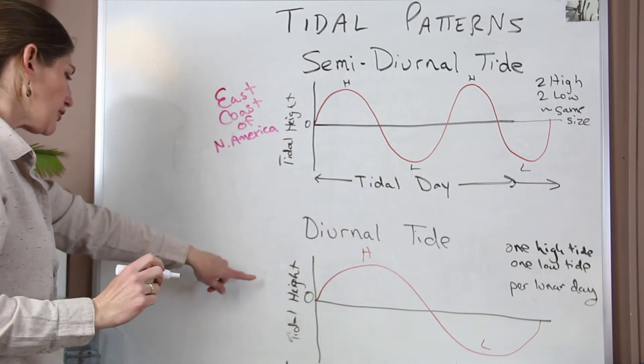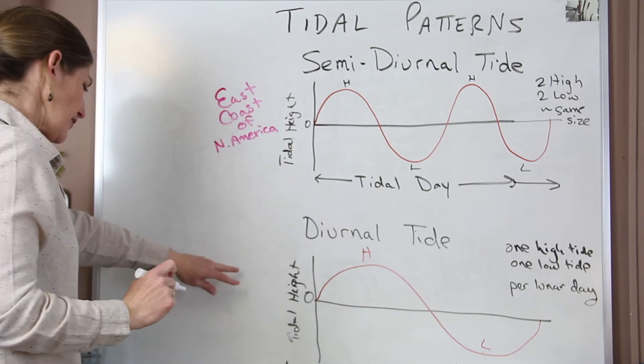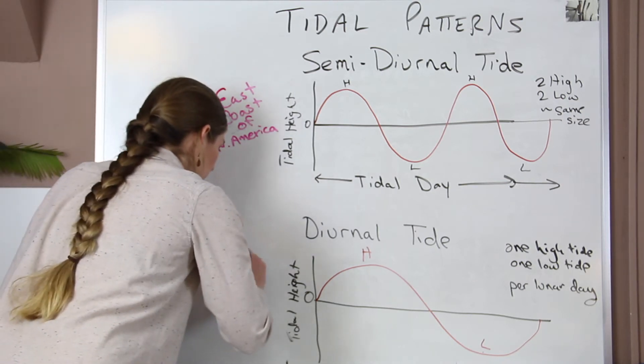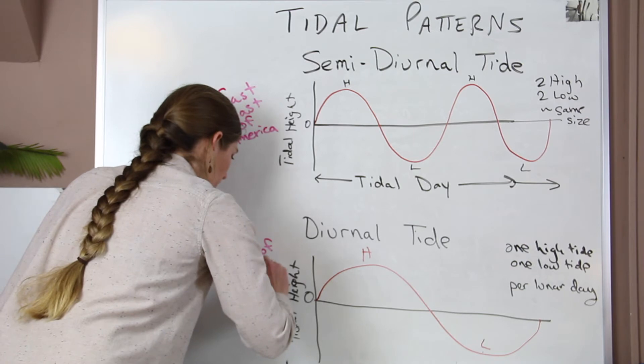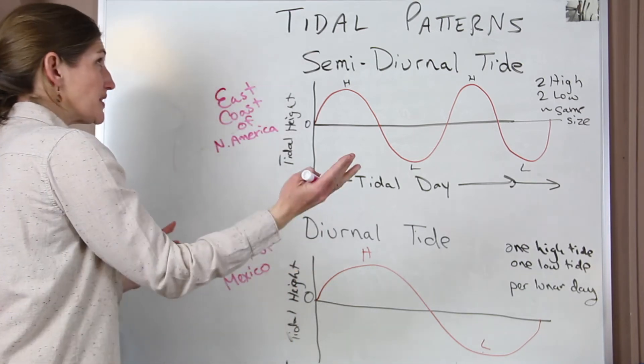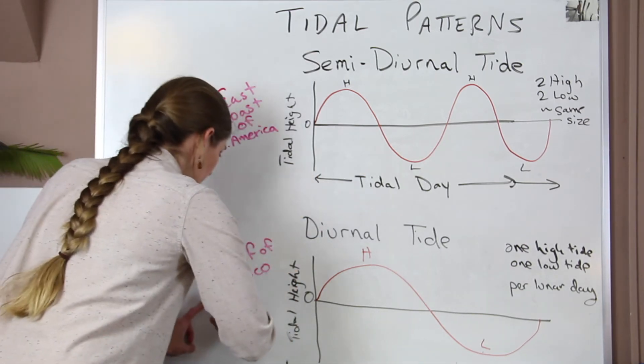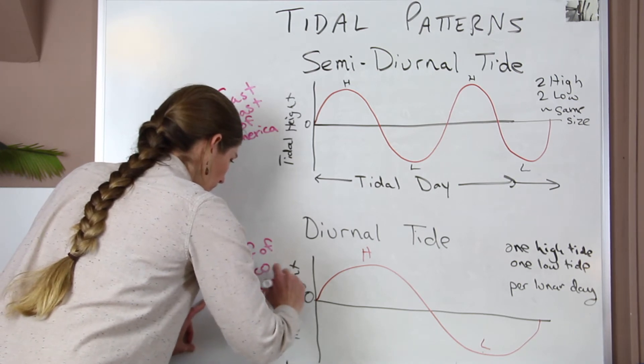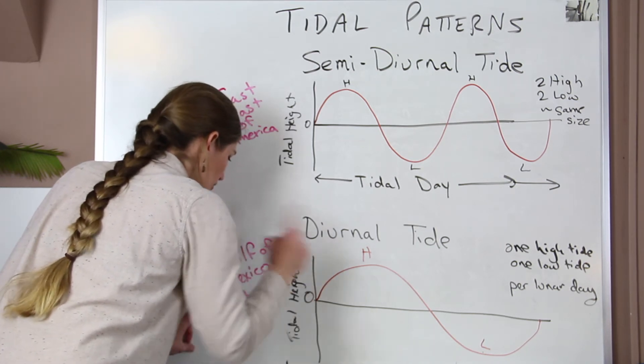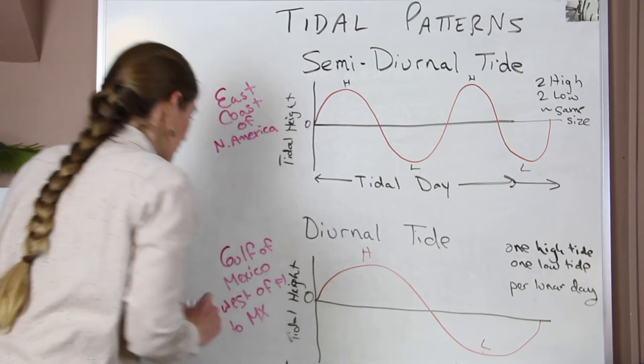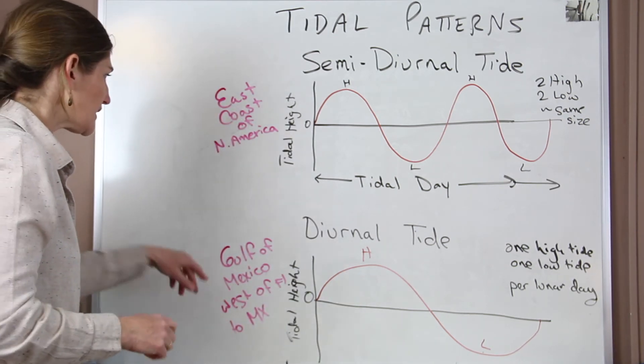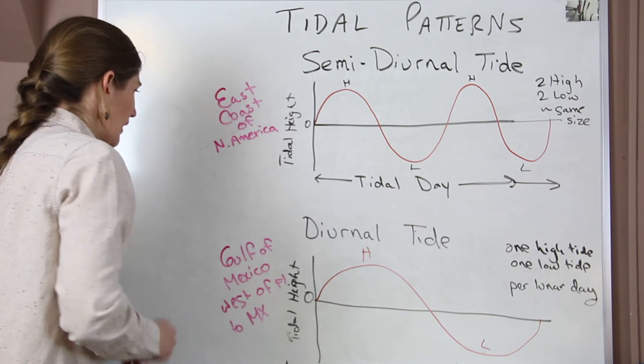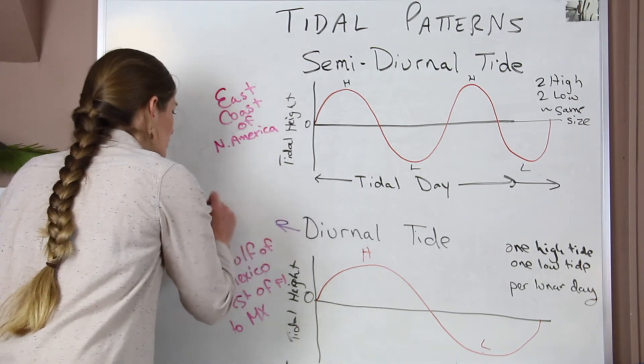Okay, we see our diurnal tides, they're very common in the Gulf of Mexico, and that's going to be west of Florida all the way through Texas. The reason we see this diurnal tide here, they're very common in closed basins, and the Gulf of Mexico is one of those.